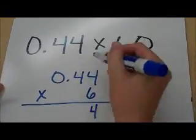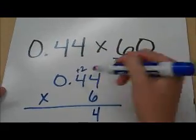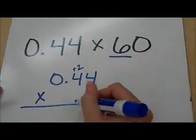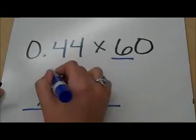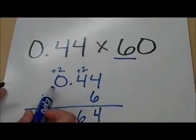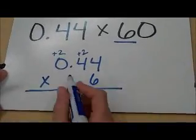6 times 4 is 24. 6 times 4 is 24, add your 2 for 26. 6 times 0 is 0, but you've got your plus 2 there.